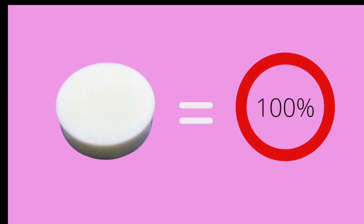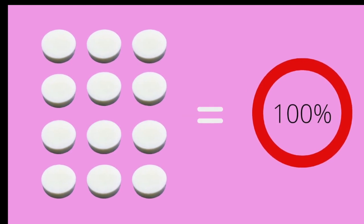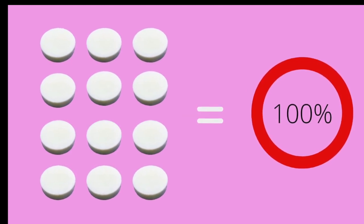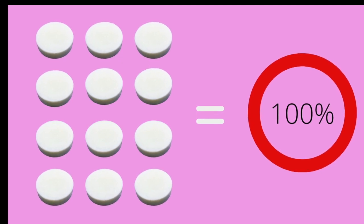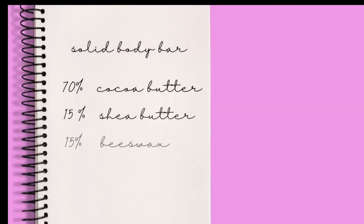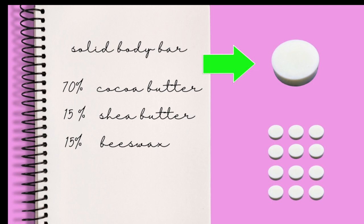If you decide to make only one bar, your 100% would be the total weight of one bar. If you were to make 12 bars, the total weight of all 12 bars combined would be your 100%. But the percentages — meaning the amounts of the ingredients in relation to each other — remain the same no matter if you are making just one bar or 12.